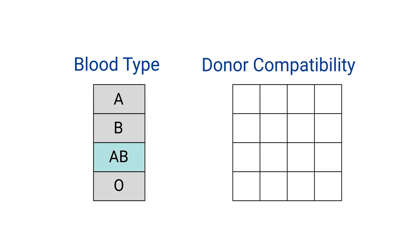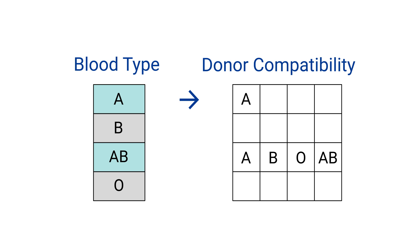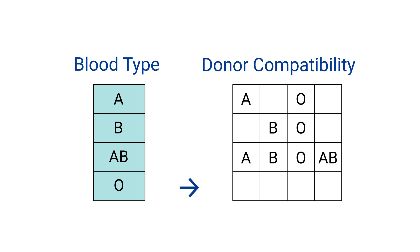Blood type AB is considered a universal recipient, meaning they can receive from any blood type. However, if you have blood type A, you can only receive a kidney from a donor with blood type A or blood type O. If you have blood type B, you can only receive a kidney from a donor with blood type B or blood type O. And if you have blood type O, you are compatible with donors who are also blood type O.